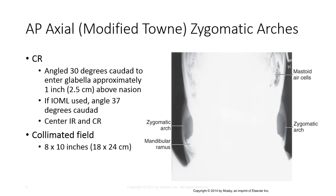If the IOML is used, angle 37 degrees caudad. Center the IR and CR with a collimated field of 8 by 10 inches.